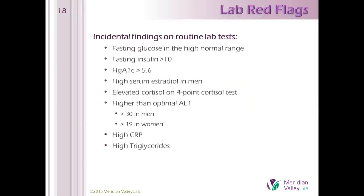Incidental findings on routine lab tests: hemoglobin A1c, higher fasting insulin, and certainly high fasting glucose are fairly obvious. Some things are less obvious: high serum estradiol in men, and higher than optimal ALT, especially more than 19 in women — which is well within the reference range. This is not a comprehensive list.